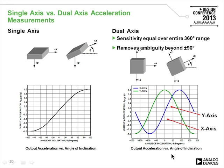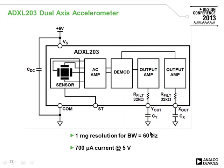The dual-axis approach uses two accelerometers offset by 90 degrees so when one is at its peak, the other is at zero—combining both outputs gives sensitivity across the full 360-degree range. The ADXL203 is a dual-axis accelerometer containing both sensing elements offset by 90 degrees, with amplifiers, a demodulator, two output amplifiers (X and Y), and series resistance for external noise filtering.